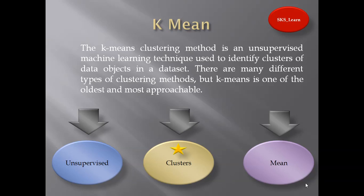You will notice I'm taking three names continuously here. One is unsupervised learning. Second is clusters. Third is mean. So it's unsupervised machine learning — this is very clear to you all. And what does mean mean? Mean is something like a middle point or average of the data. It's a center point of the data.